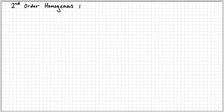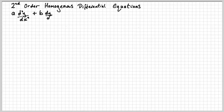Second order homogeneous differential equations. First of all, what do they look like? Well, they look like this: a d²y/dx² plus b dy/dx plus cy equals zero, where a, b, and c are constants.